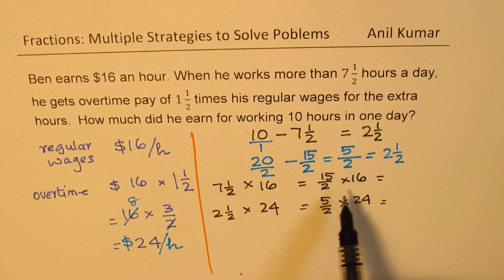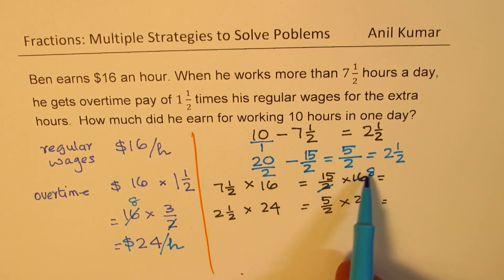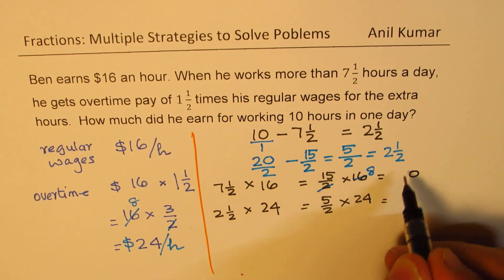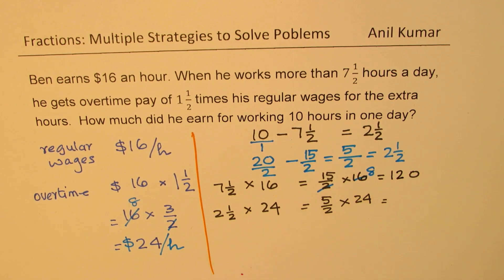Now, multiplication and division. 16, you should divide first by 2. You get 8. Now multiply 8 with 15. That is simpler. So when you do that, 8 times 5 is 40, 0. 8 times 1 is 8 and 4 is 12. We get 120.